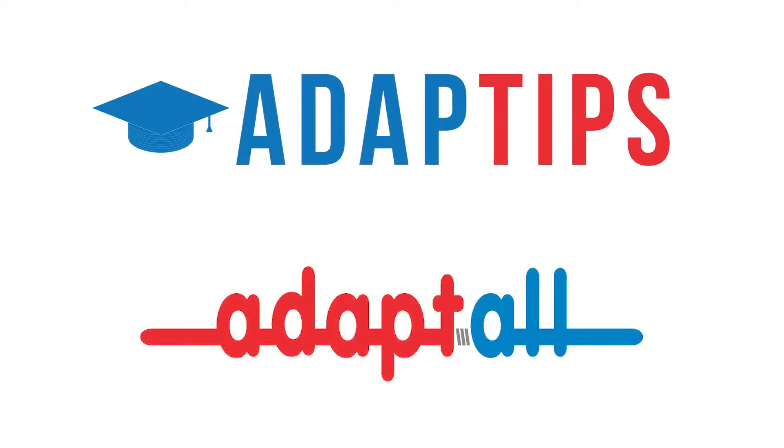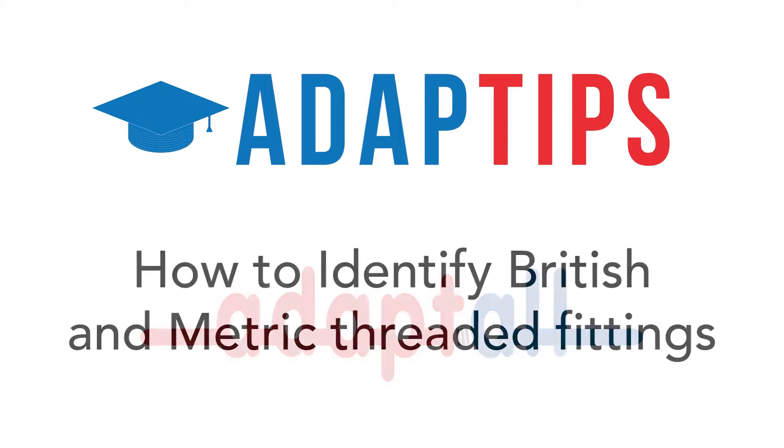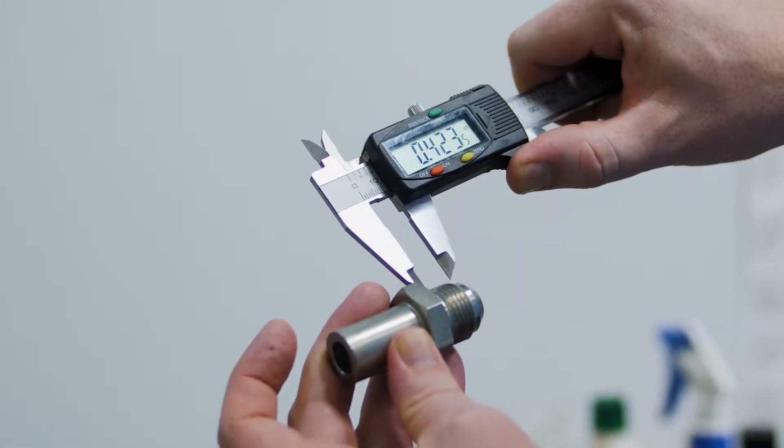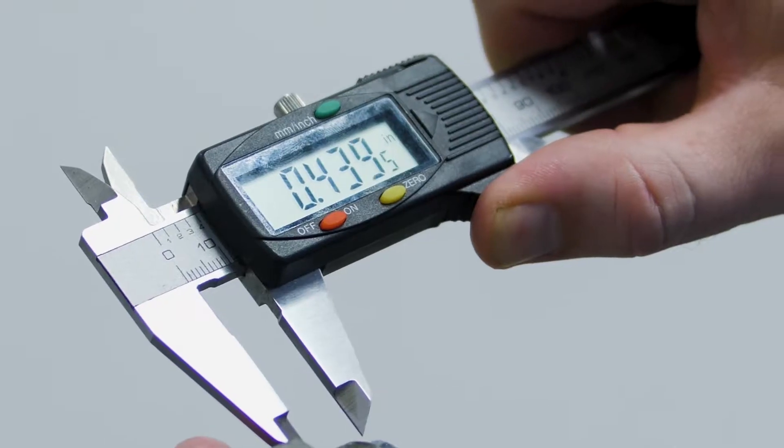First, it is a good idea to watch our Adapt-Tips episode, How to Identify British and Metric Threaded Fittings, so you understand the underlying aspects of thread identification, especially foreign threads.